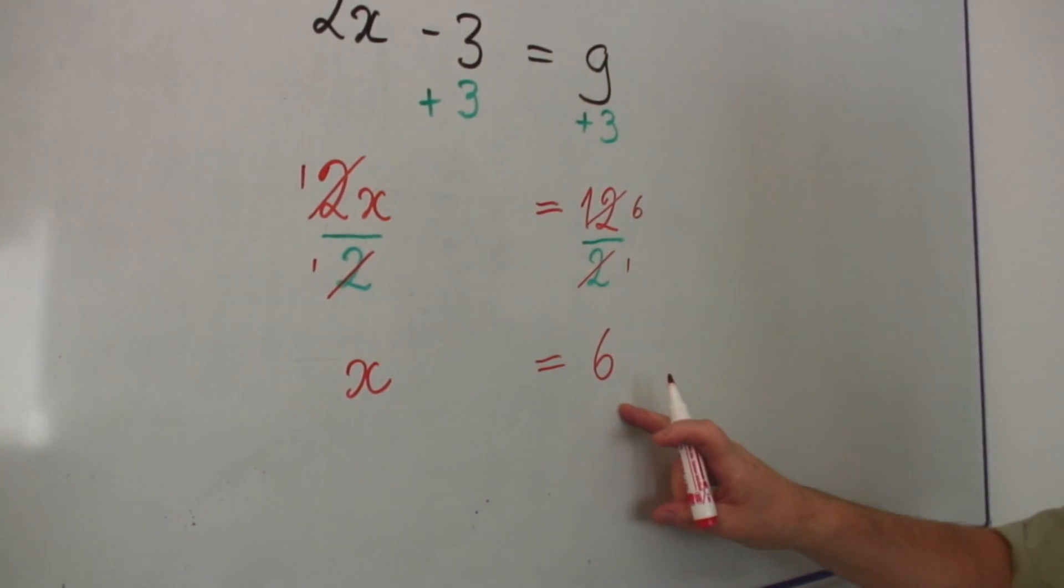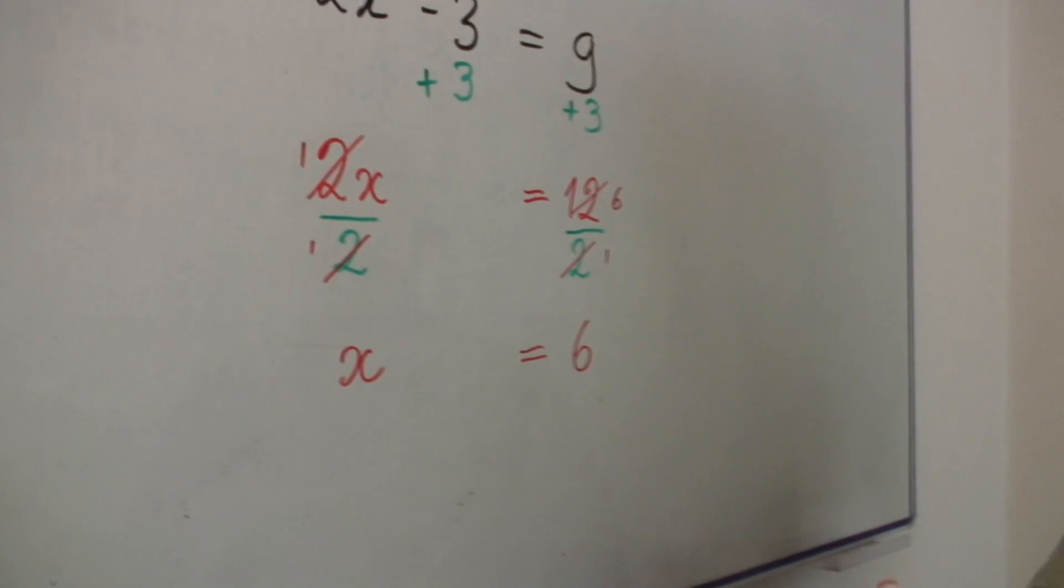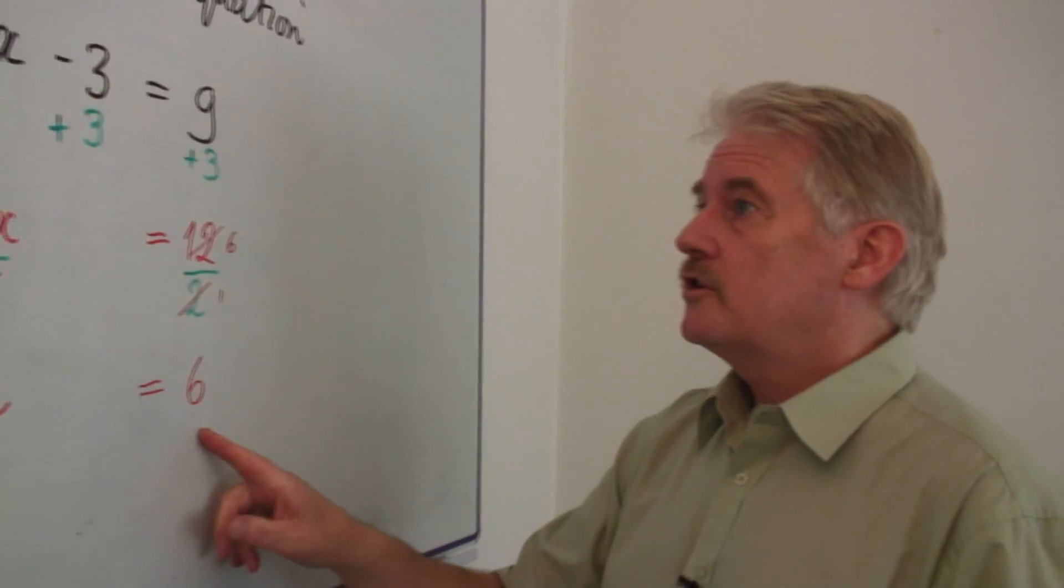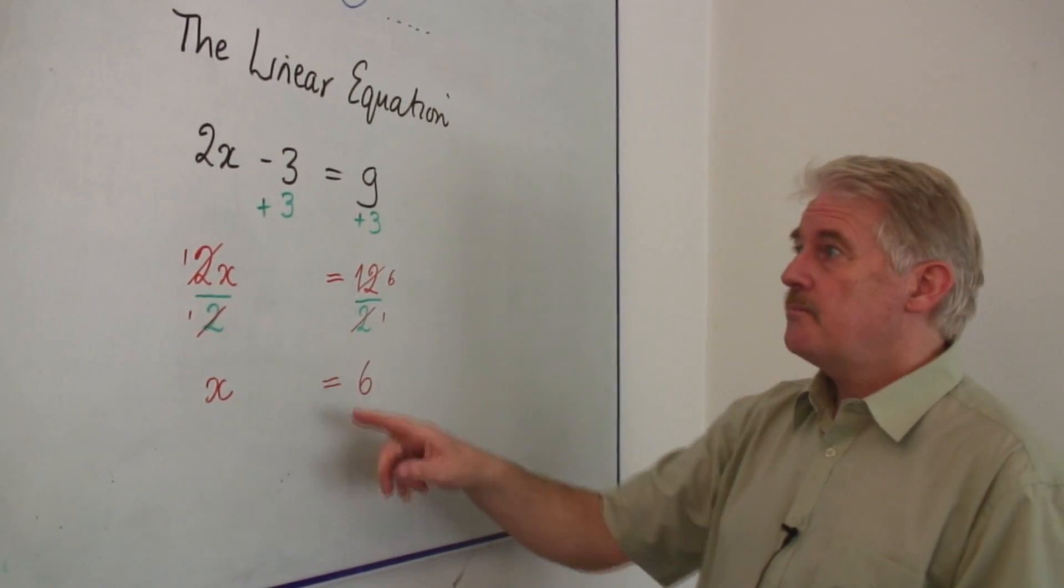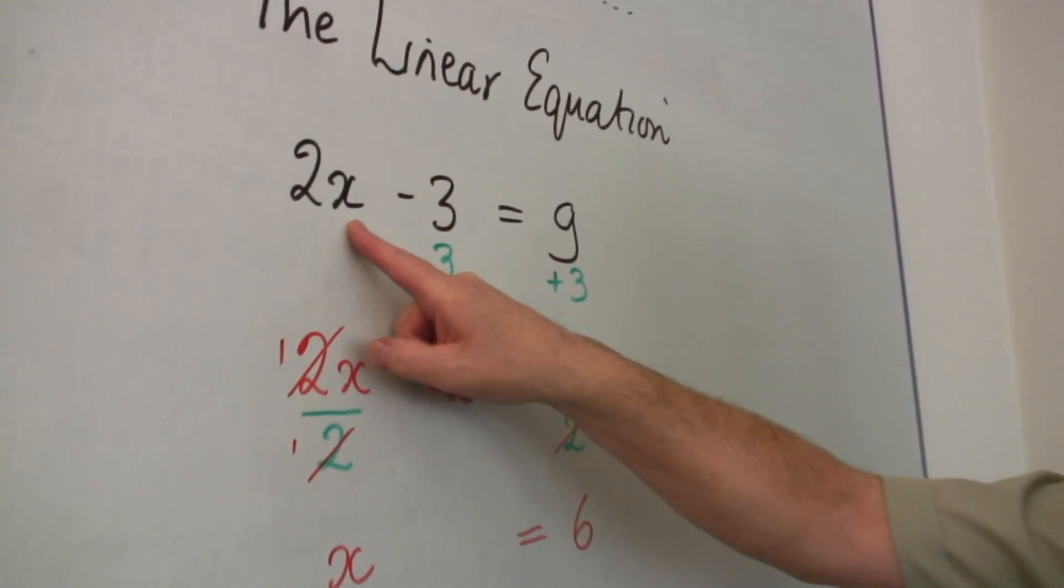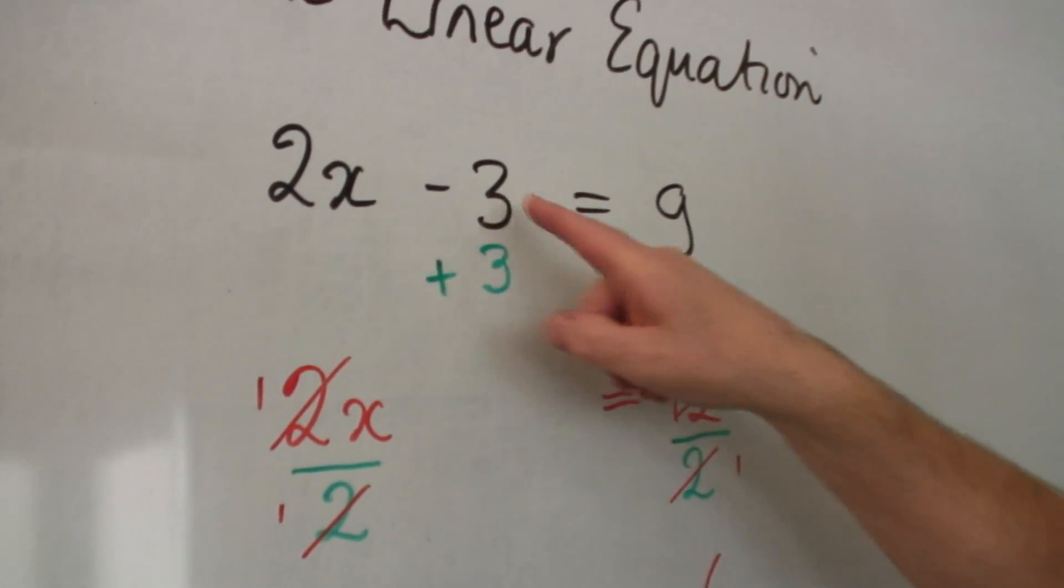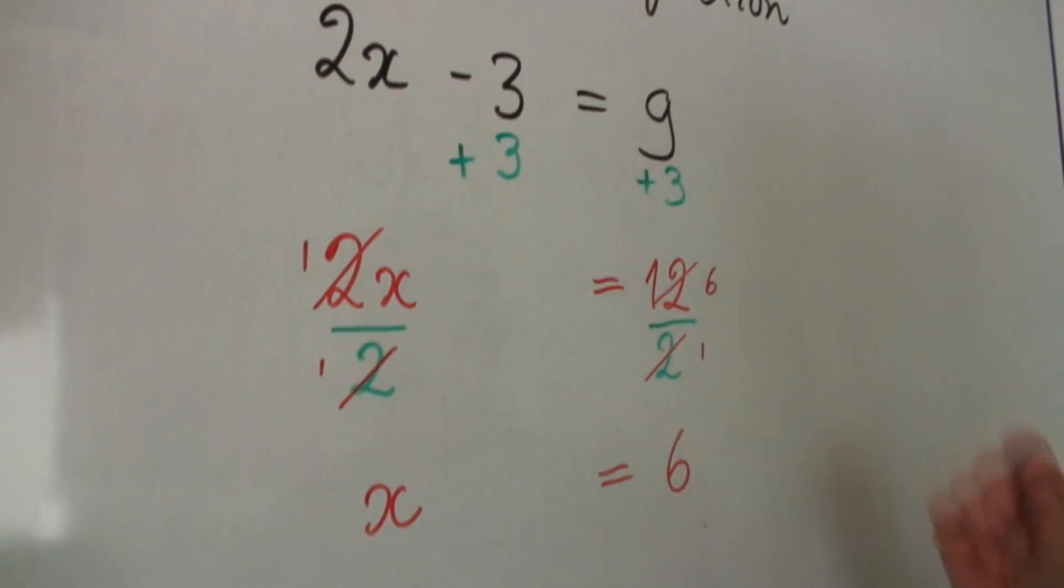So the result is that x is equal to 6. This is the solution to this equation. I can try it here. Try it back. Put x is 6 here. 2 times 6 is 12. Minus 3 is 9. Correct.